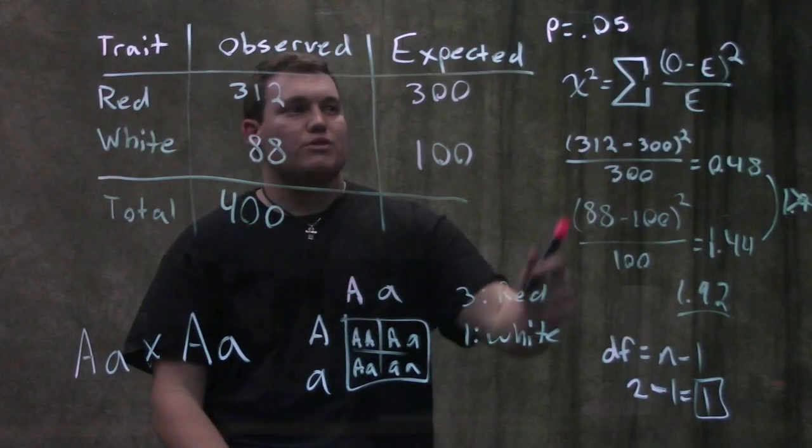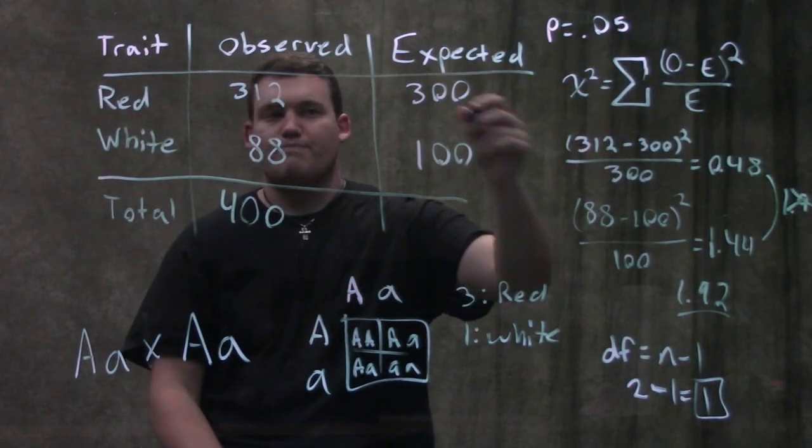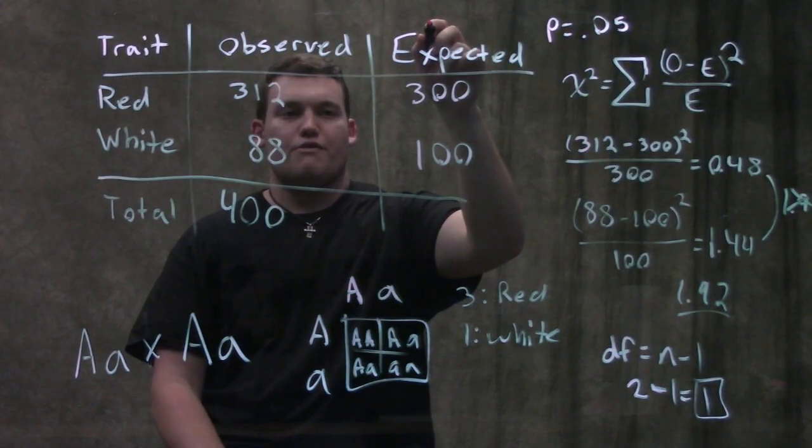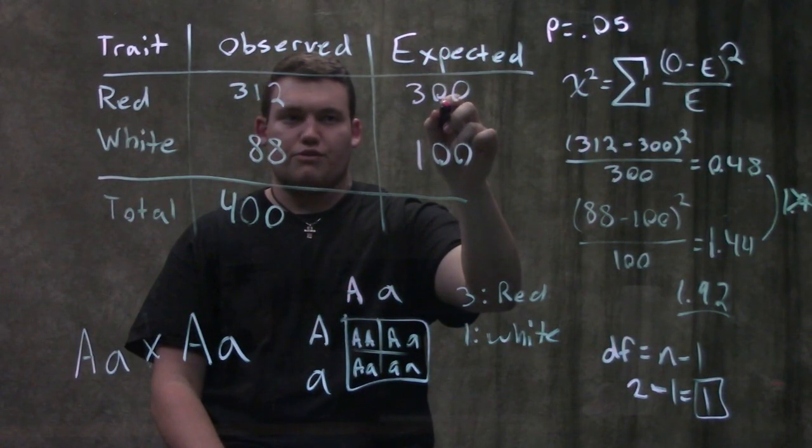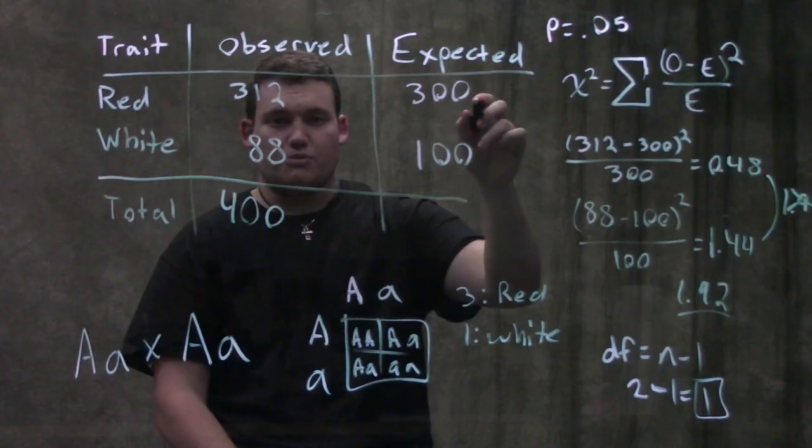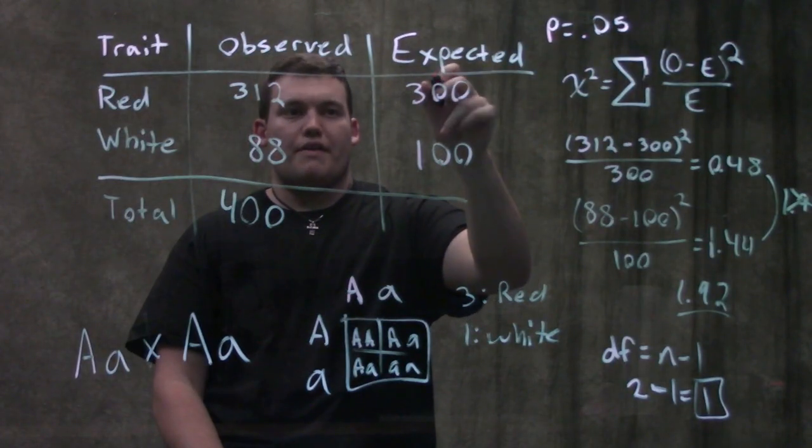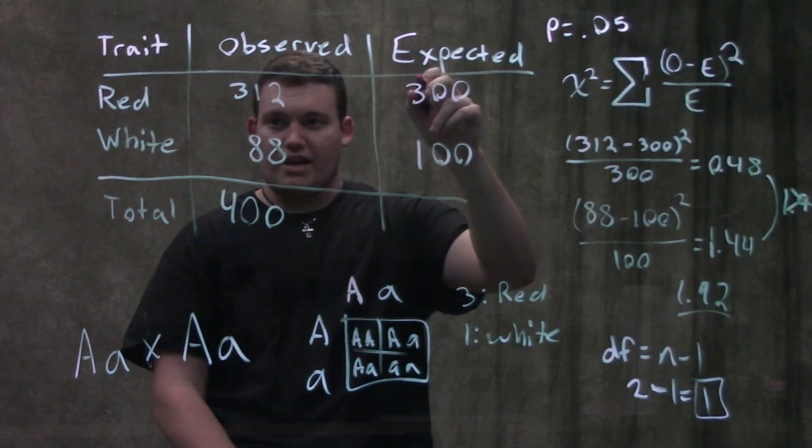And what we're gonna have, so what we're gonna have is we're gonna go to our p-value of 0.05. So I go across my p-value of 0.05, I go down to my degrees of freedom is 1. I would assume that would be the first one.